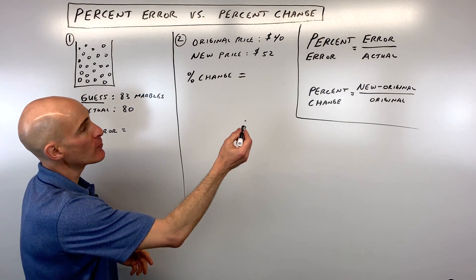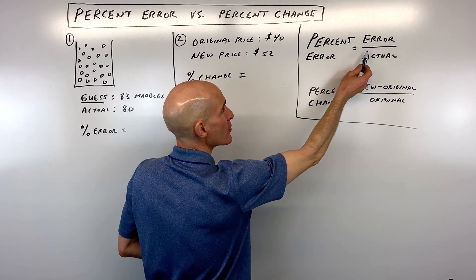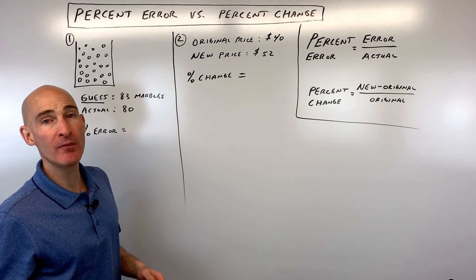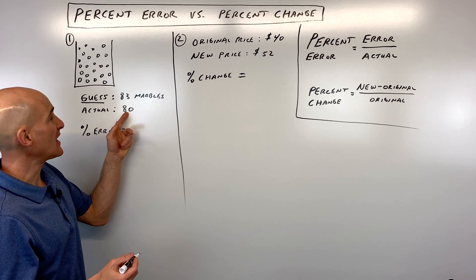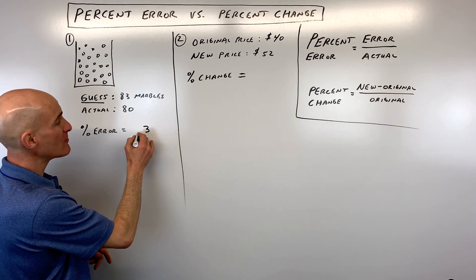So how do you do that? Well, the formula you want to use here is percent error equals the error divided by the actual amount. So the error means how far off are you. Well, you guessed 83, there was actually 80, so you were actually off by three marbles.